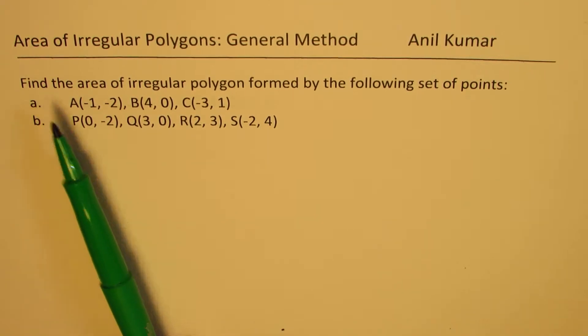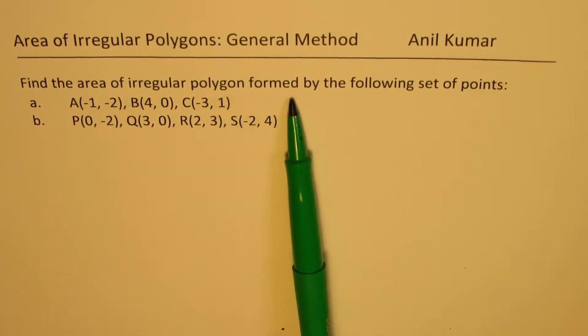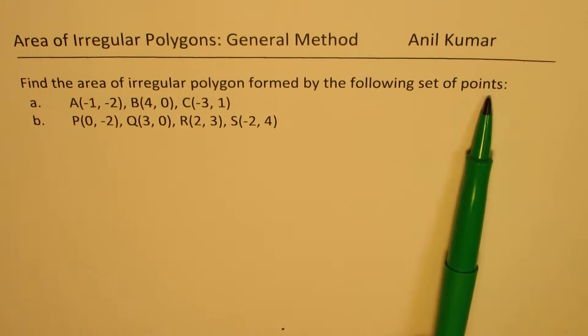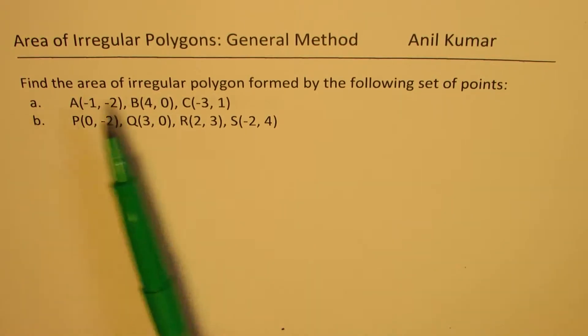The question here is, find the area of irregular polygon formed by the following set of points. We'll take up two examples.